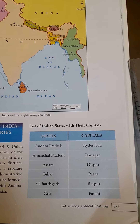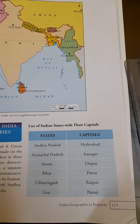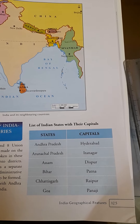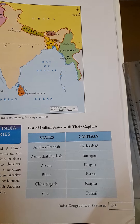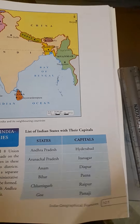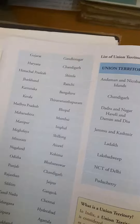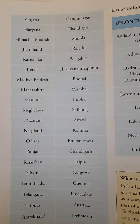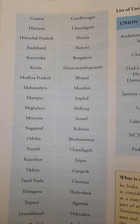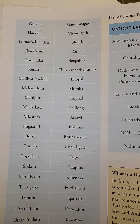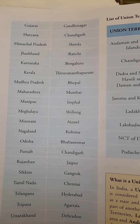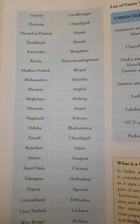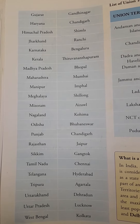Andhra Pradesh — capital is Hyderabad. Arunachal Pradesh — capital is Itanagar. Assam — capital is Dispur. Bihar — capital is Patna. Chhattisgarh — capital is Raipur. Goa — capital is Panaji. Gujarat — capital is Gandhinagar. Haryana — capital is Chandigarh. Himachal Pradesh — capital is Shimla.